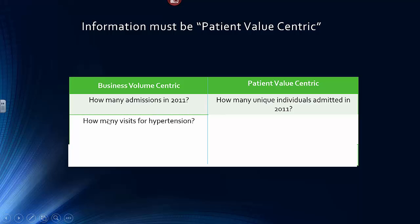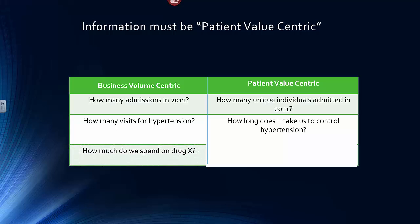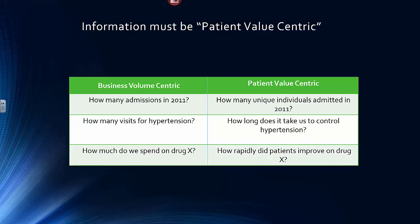A business question might be: how many visits for hypertension, or how many fee-for-services were collected? A value question would be: how long does it take to control hypertension? This patient-value question is central to the medical home accountable care paradigm. A volume question is: how much do we spend on drug X? A value question is: how rapidly did patients improve when on drug X?